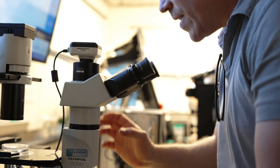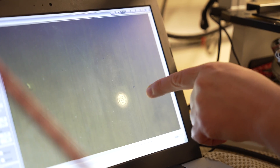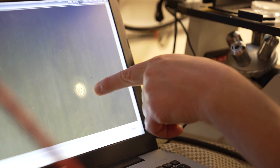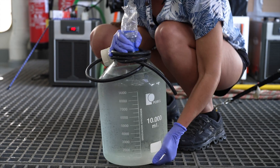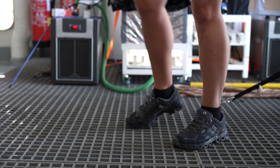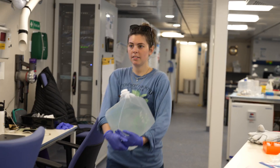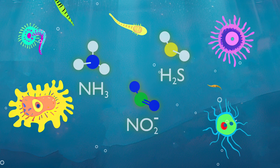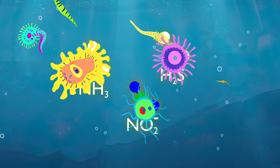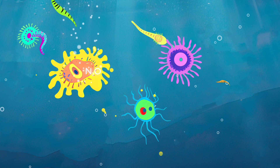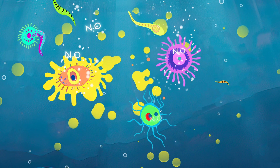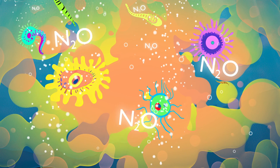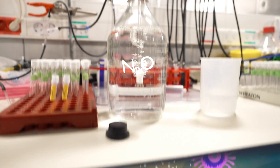Unfortunately, some of these low-oxygen zones have been called dead zones, which is incorrect, because there is actually life — it's just that it is microbial life. Microbes are thriving in these zones, but they produce gases like nitrous oxide as they consume molecules like ammonia, nitrite and sulfide for energy. Nitrous oxide is 300 times stronger than carbon dioxide as a greenhouse gas, which has a pronounced effect on our climate.